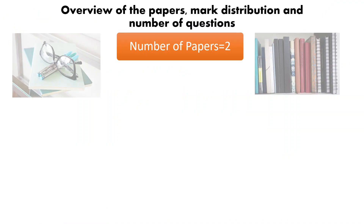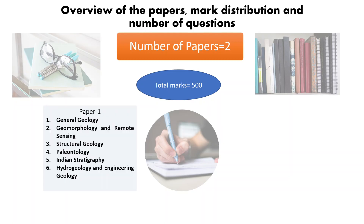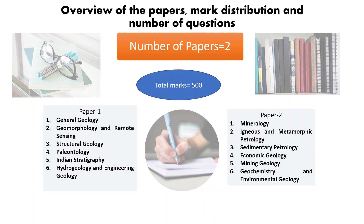Let us take an overview of the number of papers, pattern of examination, and the mark distribution in the geology optional paper. The optional paper consists of two separate units with 12 individual subjects in total. Paper one consists of general geology, geomorphology and remote sensing, structural geology, paleontology, Indian stratigraphy, hydrogeology, and engineering geology. Paper two consists of mineralogy, igneous and metamorphic petrology, sedimentary petrology, economic geology, mining geology, geochemistry, and environmental geology. Both papers carry equal marks of 250 each, totaling 500 marks, making it a deal breaker for your selection into the final merit list.